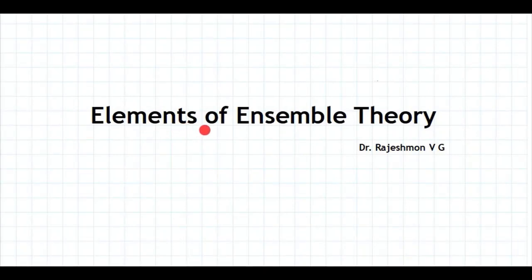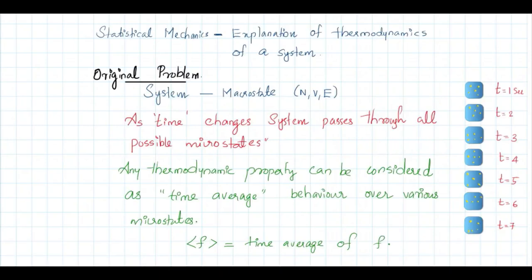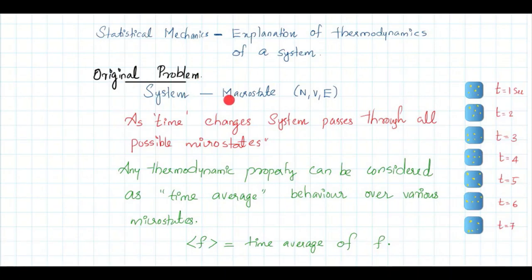In this lecture, I will explain what is the meaning of ensemble theory in statistical mechanics. Statistical mechanics is all about the explanation of thermodynamics of a system from a microscopic point of view. The original problem is a system specified by a macrostate — the total number of particles N, total volume V, and total energy E. This is a particular specification of the system called a macrostate.